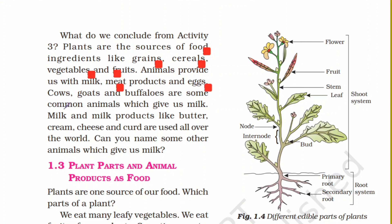Cows, goats and buffalos are some common examples which give us milk and milk products like butter, cream, cheese and curd. In this video, we will learn which parts of plants we use as food and the food products we get from animals. Topic 1.3: Plants, parts and animal products as food.